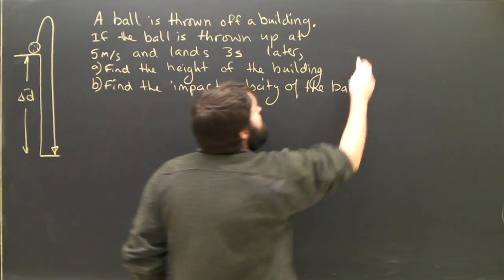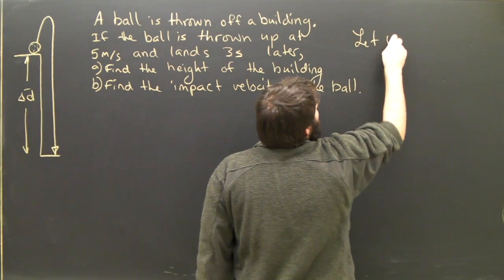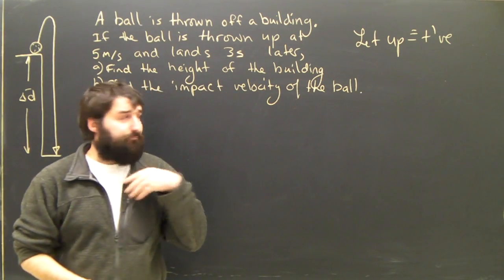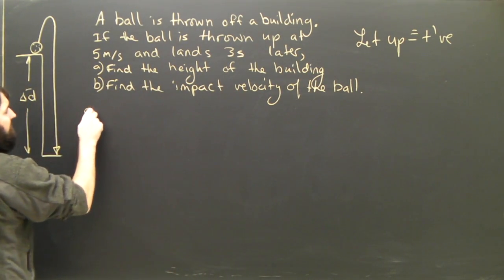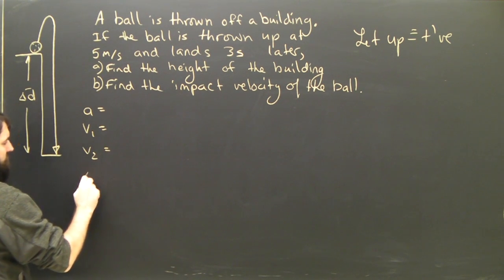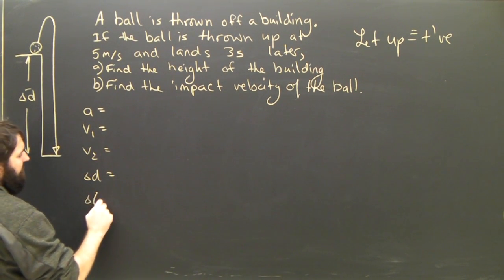We need to define a direction. So I'm going to say, let up be positive. Now, for my givens, same as always, the big five: A, V1, V2, delta D, and delta T.